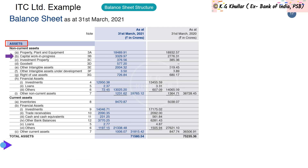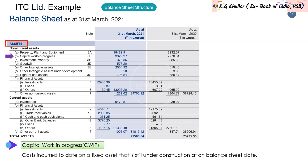Capital Work in Progress (CWIP) represents costs incurred to date on fixed assets still under construction as of the balance sheet date. The cost being incurred on such assets cannot be recognized as an operating asset until they qualify as a ready-to-use asset. All costs incurred on assets under construction are recorded as Capital Work in Progress.